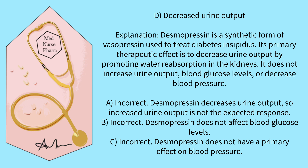Desmopressin is a synthetic form of vasopressin used to treat diabetes insipidus. Its primary therapeutic effect is to decrease urine output by promoting water reabsorption in the kidneys. It does not increase urine output, blood glucose levels, or decrease blood pressure.